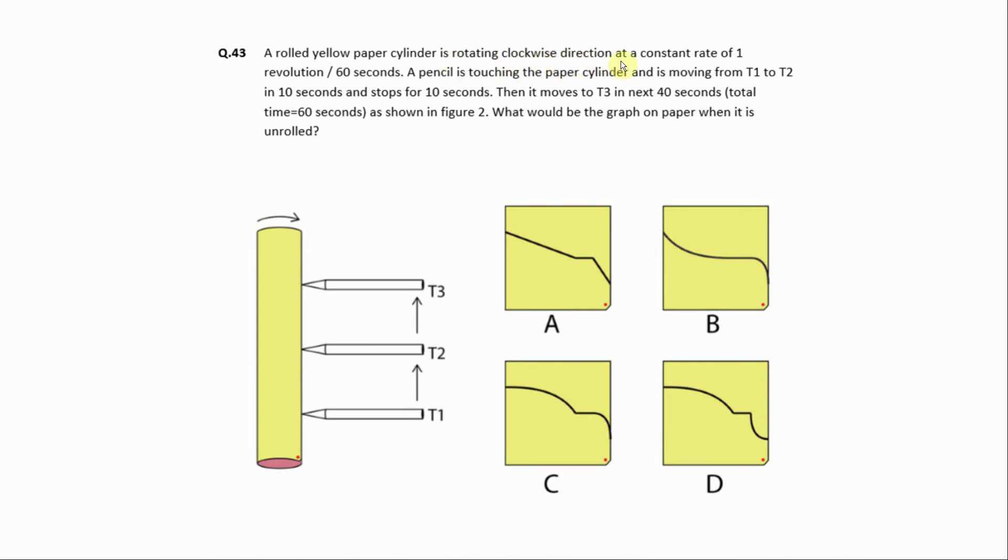It is rolled in clockwise direction at a constant rate of 1 revolution per 60 seconds. So we roll the paper, and this point is rolled in 1 minute, it will get the same point.